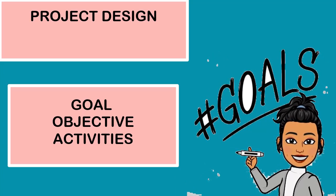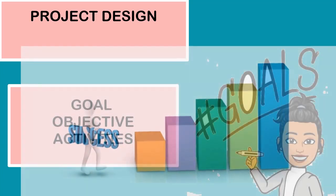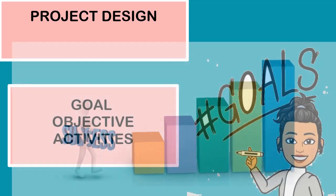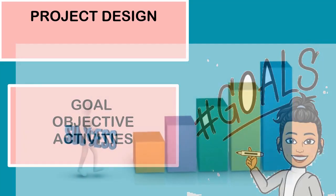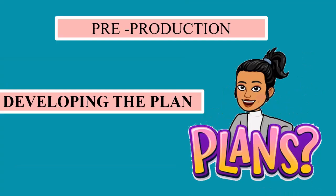Goal and objective specify the purpose of the multimedia product, and activities specify the series of actions which the production team has to take to meet success. Pre-Production: In this step, based on the plan and design, the product will be developed.